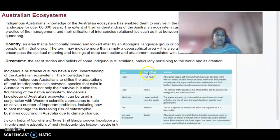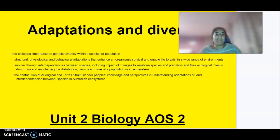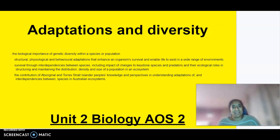Indigenous knowledge of ecosystems can be used in conjunction with Western scientific approaches to help solve important problems, such as managing catastrophic bushfires and climate change events. Areas of application include food, medicine, fire management, and increasing species distribution. This video is a summary — hopefully in class you've gone through it in more detail. If you have any questions or anything you'd like to clarify, please leave it in the comments below.